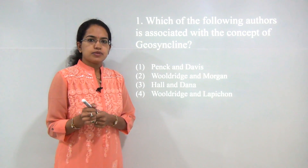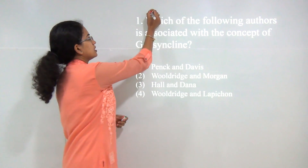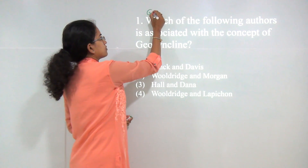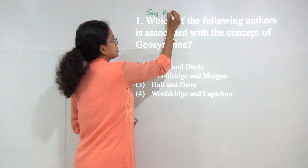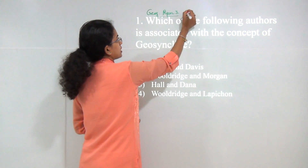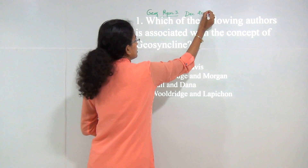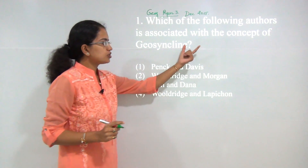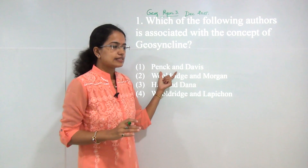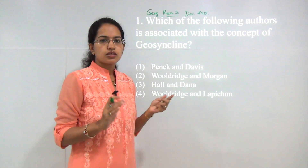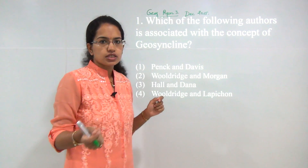Welcome to the session. We will be solving the CBSE NET paper for Geography Paper 3. Geography Paper 3 had 75 questions; we will be solving 25 questions in each set. This is for December 2015. Most of the questions here were based on theoretical knowledge, except the section on cartography, remote sensing, and GIS, which were based on conceptual knowledge.